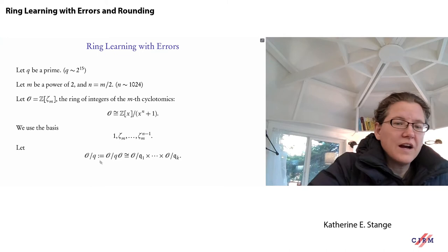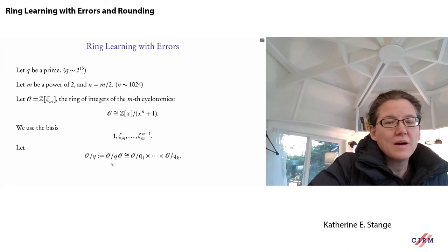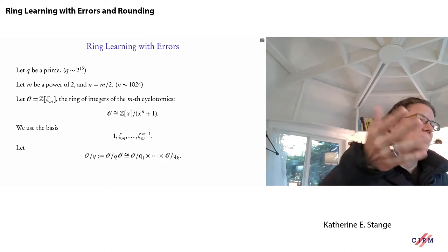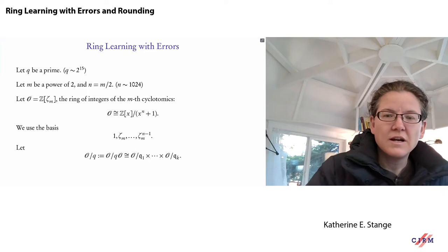From number theory, by looking at the splitting of q in the field, the Chinese Remainder Theorem tells us this ring mod q is a product of finite fields. As a vector space it looks like F_q^n, and we can work in this space while respecting the ring structure — specifically by using multiplication in the ring.